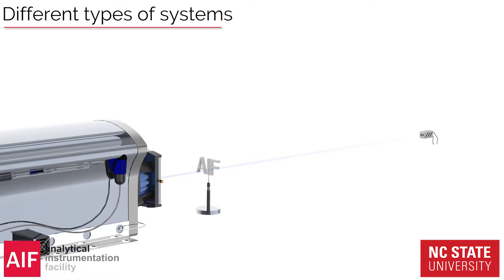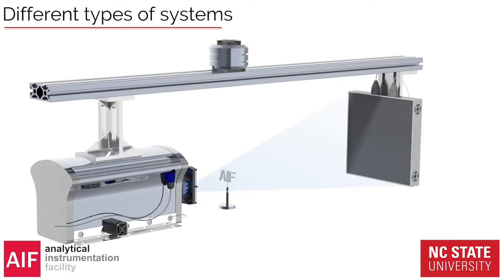You can even use the pencil beam — the first type we ever had, with only one pixel to collect photons. Here you need to translate the sample both up and down and sideways, which takes a very, very long time, and you have very high requirements on stage precision. There are also more novel systems where you have the sample fixed and rotate the rest of the equipment — the source and detector — instead. This is very similar to medicine, where the patient is stationary and equipment rotates around them, though it is typically more unstable. The benefit is that we can increase scanning speed quite a lot.